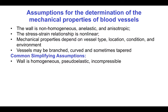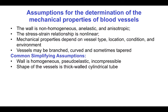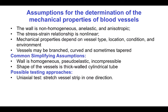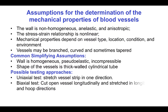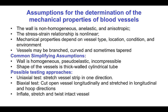Normally, the intima is ignored. The shape of the vessels is assumed to be a thick-walled cylindrical tube. Some testing approaches for blood vessel mechanics include uniaxial testing of a vessel strip stretched in one direction, biaxial testing of a longitudinally open vessel stretched in the longitudinal and circumferential directions simultaneously, simultaneous inflation, stretch, and twist of an intact cylindrical vessel, or bending of vessel wall strips.